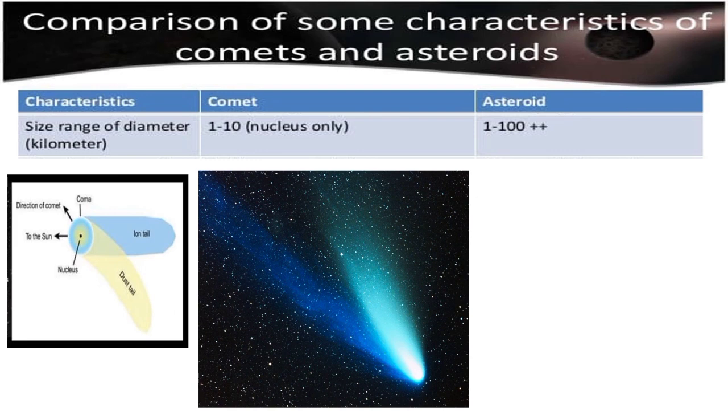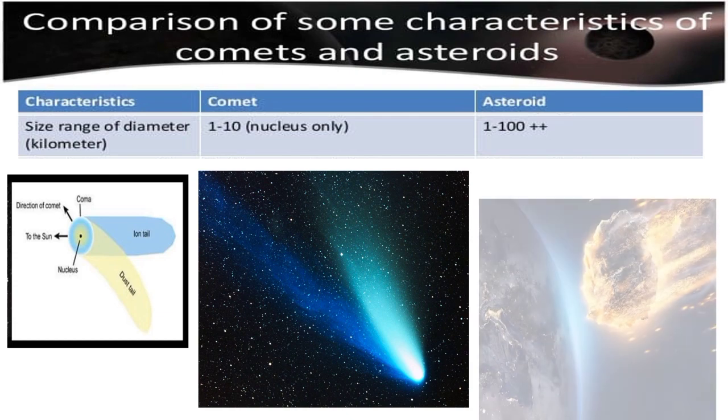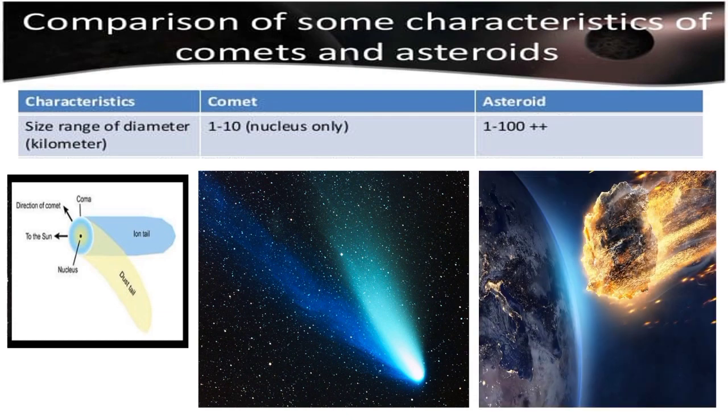Comets have a size range of 1 to 10 kilometers, nucleus only, while asteroids have a size range of 1 to 100 plus kilometers. Obviously, asteroids are much bigger than comets.